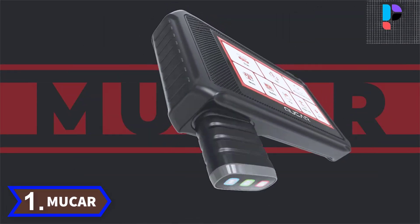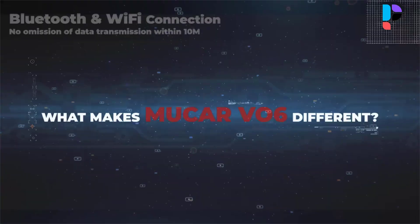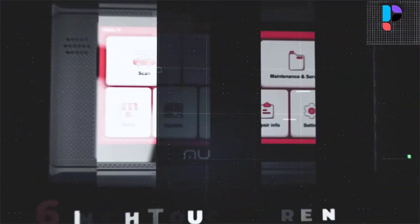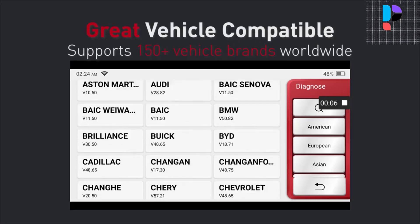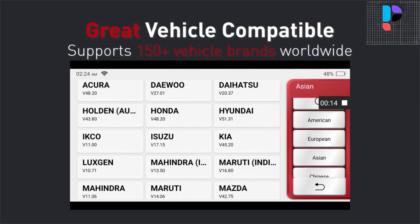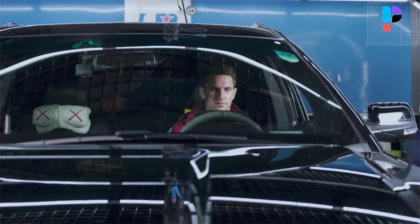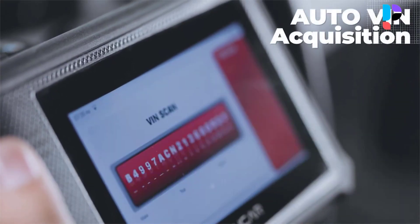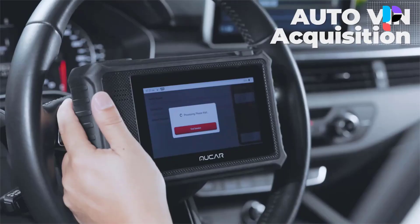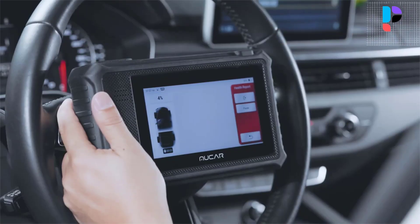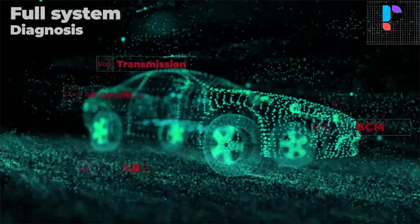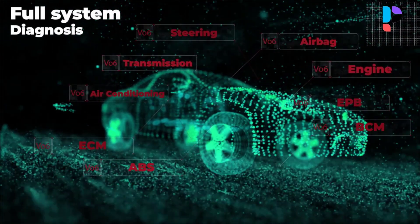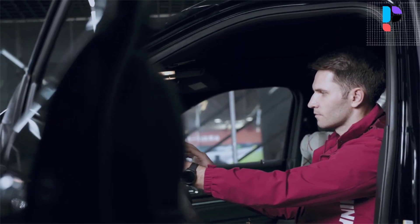Number 1. Brand Name: Mucar. Model Number: V06. The Mucar V06 Bluetooth OBD2 scanner is the latest upgraded version from 2021. It quickly establishes a connection with the car through built-in Wi-Fi and Bluetooth — no annoying short cable needed, with no loss of data reading within 10 meters. You can check the fault location of the vehicle while viewing fault data to quickly determine the cause and eliminate it.